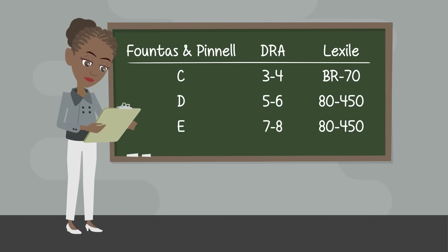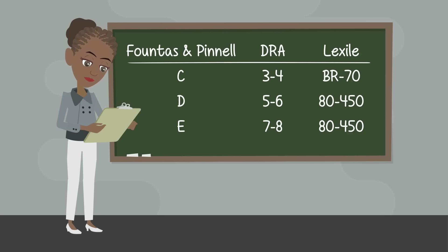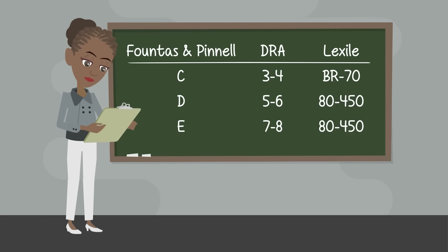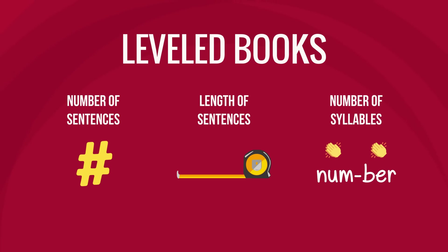School-age students may also experience instruction that is not explicit. In these classrooms, students are assigned leveled books. Parents and many teachers may assume that a book at a student's just-right level will include words the student can read, but this is not how leveled books work. Leveled books are determined by things like the number of sentences, length of sentences, and number of syllables. Therefore, lower-leveled books will be shorter and have fewer sentences, but phonics patterns are not controlled for.